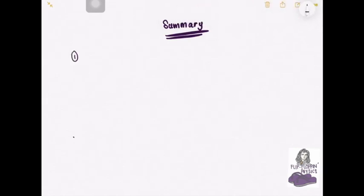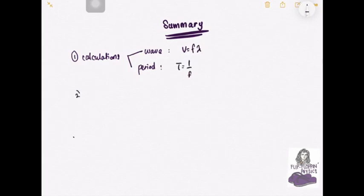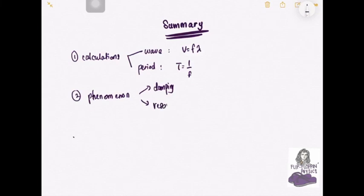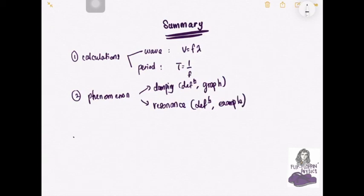To recap: there are two key equations — the wave equation v equals f times lambda, and the period equation T equals 1 over f. There are also two phenomena to know: damping (definition and graph) and resonance (definition and examples). Next video we'll be looking at wave phenomena such as reflection, refraction, and so on. Thank you.